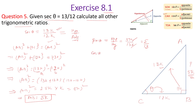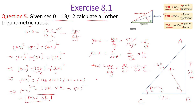Cos theta is the reciprocal of sec theta. So we can write directly 1 upon (13K/12K), which gives cos theta equals 12 upon 13. For tan theta, using TOA — tan equals opposite upon adjacent, that is AB upon BC = 5K upon 12K = 5 upon 12. Cot theta is the reciprocal of tan, therefore cot theta equals 12 upon 5.